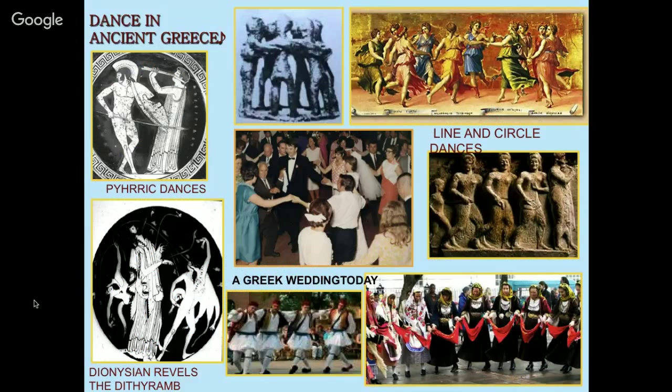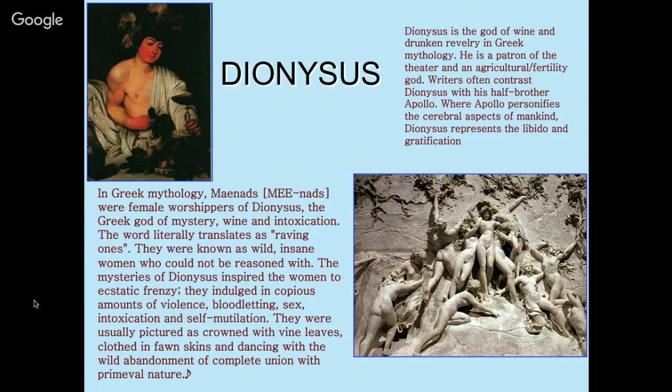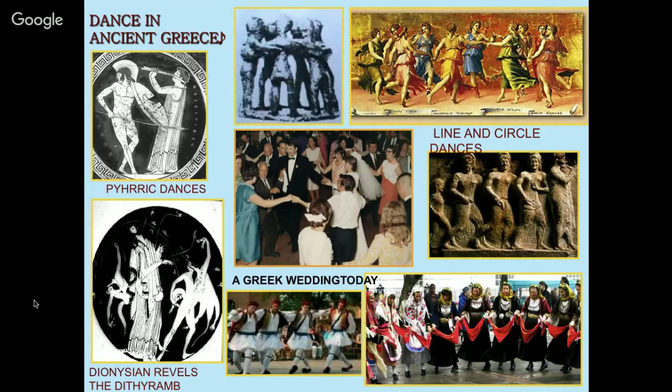Here are some paintings showing both the Apollonian and Dionysian. The Dithyramb was a Dionysian revel — like a rave, dancing all night and drinking wine. Then we have the line dances and very orderly circle dances. The wedding dance is a very Apollonian dance.